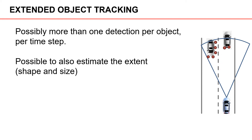By extent we typically mean the shape and the size of the object. If we look at the vehicle on the left in this illustration, we see that the five detections approximately form an L-shape. The size of this L-shape is related to the length and width of the vehicle, and we can use the multiple detections to estimate the length and width of the vehicle.